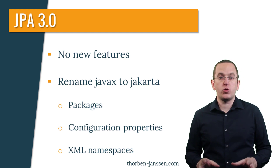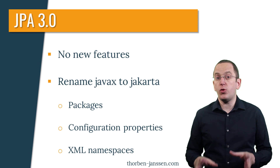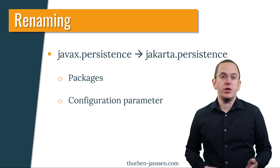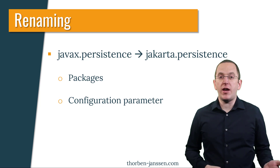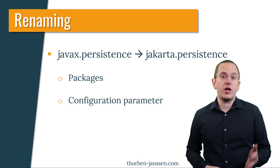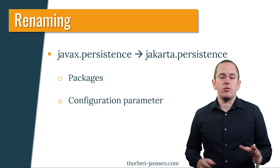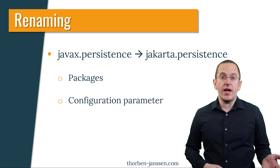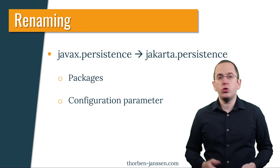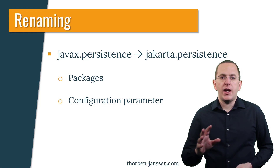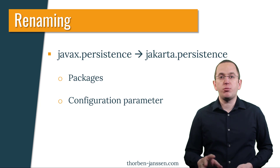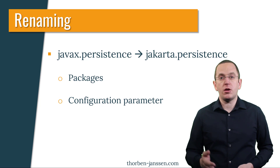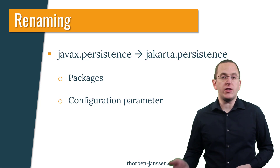The goal of these changes was to replace the word Java to avoid legal issues. The prefix of the package names and configuration parameter names changes from javax.persistence to jakarta.persistence. For example, the import required for the Entity annotation changes from javax.persistence.Entity to jakarta.persistence.Entity. And the name of the javax.persistence.schema-generation.database.action property changes to jakarta.persistence.schema-generation.database.action.